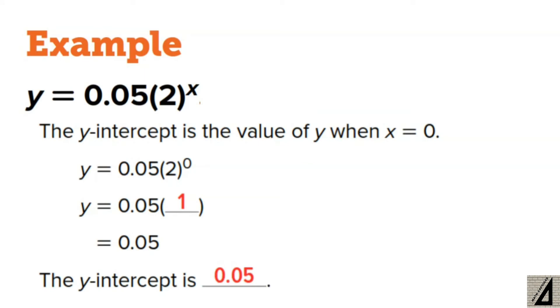The y-intercept is the value of y when x equals 0. So we're going to substitute x as 0 here in this equation to find the value of y. So it will be 0.05, because remember, any number to the power of 0 is 1. So the y-intercept is 0.05.